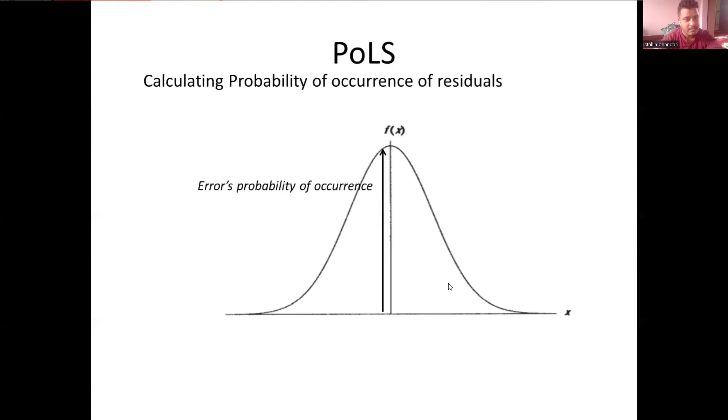In this curve, the y-axis represents the error's probability of occurrence. And along the x-axis is the error's magnitude or error value.